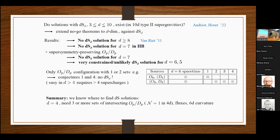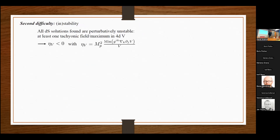The first difficulty is overcome — we know where to find de Sitter solutions and we find them in supergravity. A second difficulty or feature that we observe is instability. All these solutions we found are actually unstable — there is always one field direction along which the potential is a maximum. In terms of the parameter eta_V, this means eta_V is negative. This is related to the second derivative — the Hessian — of the potential. The minimal eigenvalue of the mass matrix is negative, meaning you have an instability.